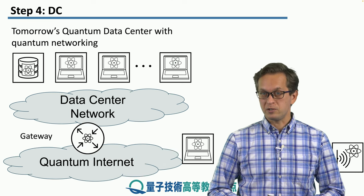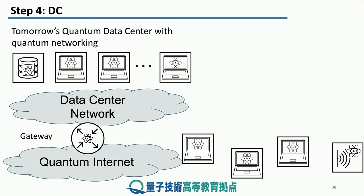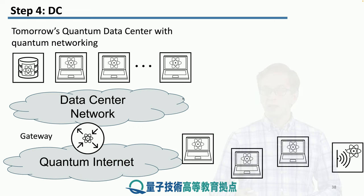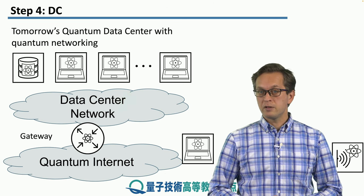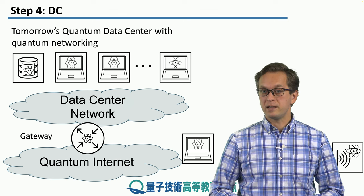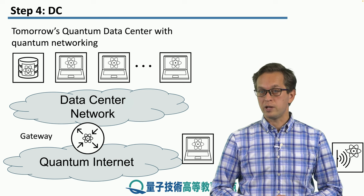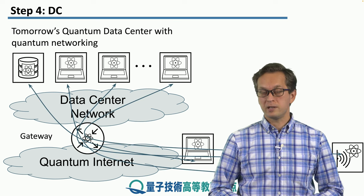That's quite an abstract image though. Here's a more concrete idea of how a quantum data center will interface with quantum clients. The clients — the computational nodes or sensor nodes — connect to the quantum internet. The quantum internet interfaces with the quantum data center network through a special router called the gateway router, placed at the boundary between the two networks, and traffic flows through this gateway router.